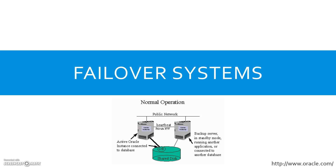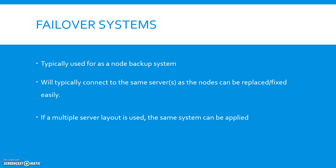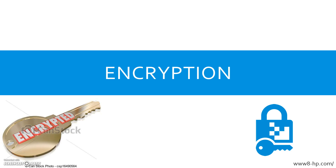There's also a failover system. This is when backup hardware automatically starts working when an error occurs, making it useful 24/7 — typically for banking. It is used for a node backup system, where a node refers to the connection from server to internet. Nodes can be replaced or fixed easily if a multiple server layout is used.